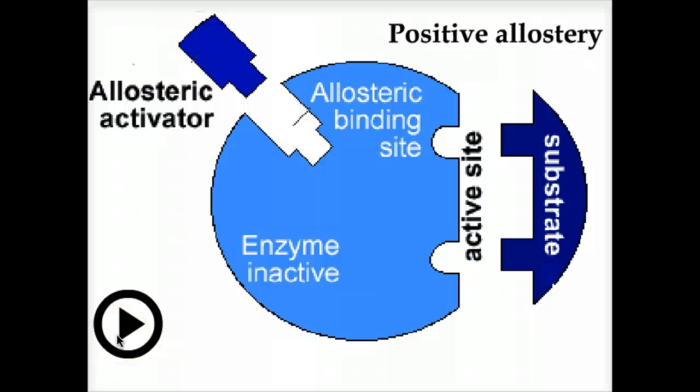There are various ways to regulate the activity of an enzyme. One is through small molecules that bind to sites on the enzyme that are distinct from the active site. There are two types: positive effectors and negative effectors.